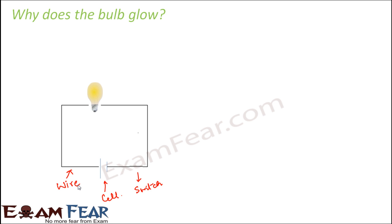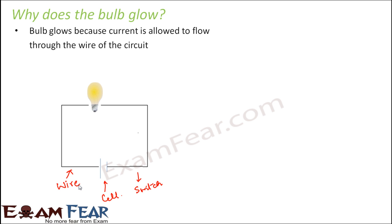Now we understand that if the circuit is complete, the bulb will glow. But the next question is: why does the bulb glow, and who allows it to glow? The bulb glows because current is allowed to flow through the wire of the circuit — the electrons are actually moving over these wires, which allow current to flow through them.